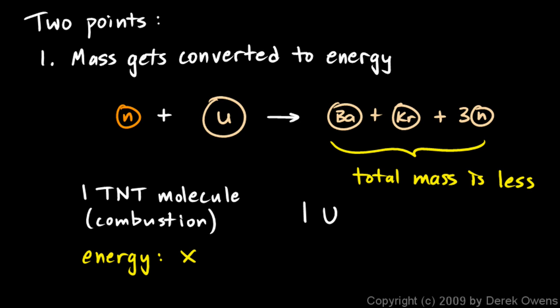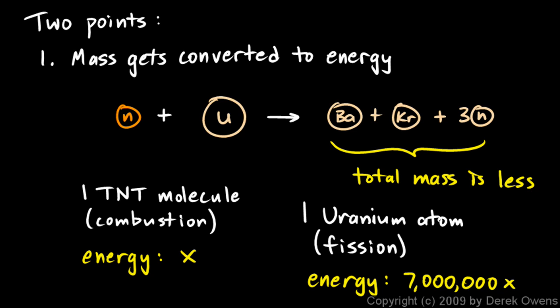One uranium atom splitting, and this isn't combustion, this is fission. The fission of one uranium atom releases an energy that would be 7,000,000 X. So if you imagine the amount of energy released from one TNT molecule compared to one uranium atom splitting, you get a massive amount of energy released from a nuclear reaction compared to an ordinary chemical reaction.